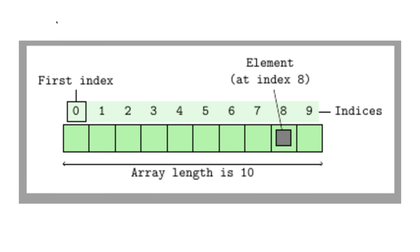A linked list is essentially a way to store data in an ordered manner. If you have any experience with arrays, as you can see in this picture here, this should be a fairly simple idea to understand. The easiest way, in my opinion, to introduce linked lists is to compare them with arrays. In most coding languages, an array is basically a fixed-sized chunk in memory. This chunk is then subdivided into smaller sections which can be accessed using indices, starting with index 0.